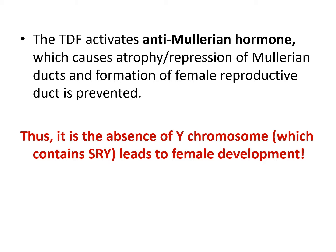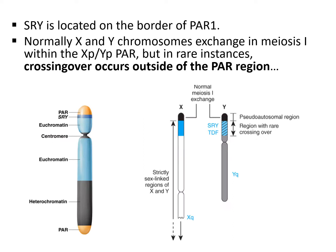It is the absence of the Y chromosome — which contains SRY — that leads to female development. If there is no Y chromosome, there will be no anti-Müllerian hormone, and there will be nothing to suppress the Müllerian ducts, so development will turn into female.